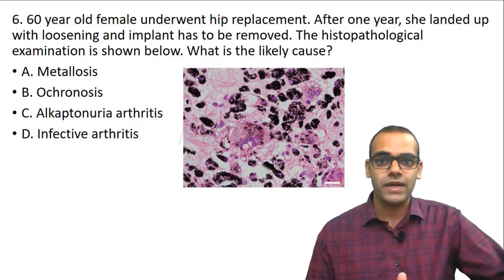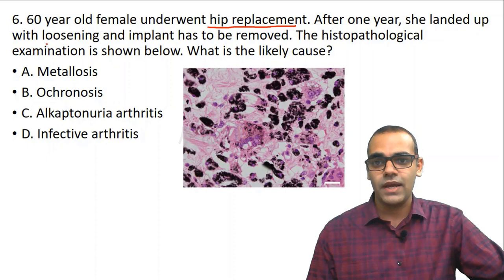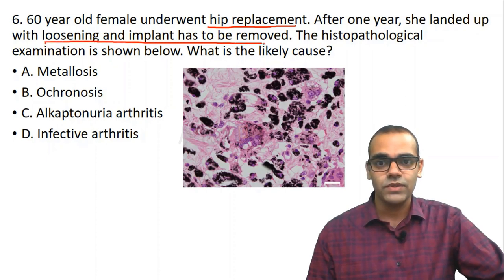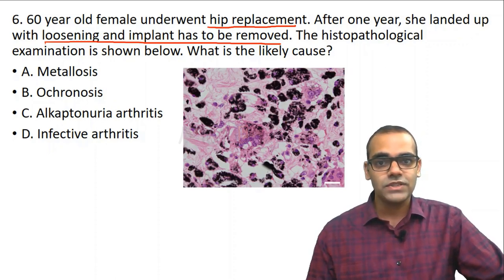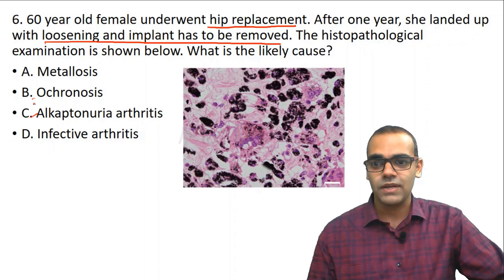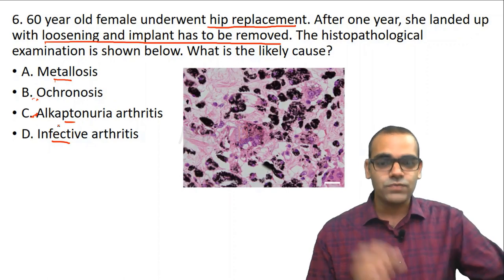Question 6: A 60-year-old female underwent hip replacement. After one year she presented with loosening and the implant was removed. A histopathological slide was given showing multiple black-to-brown colored material. The question asks: is the likely cause metallosis, ochronosis/alkaptonuria, or infective arthritis?